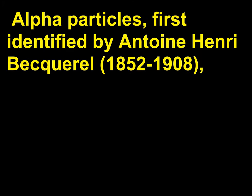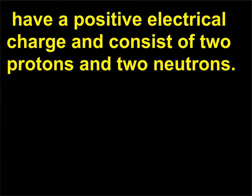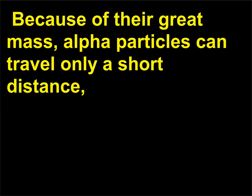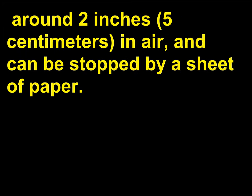Alpha particles, first identified by Antoine-Henri Becquerel (1852–1908), have a positive electrical charge and consist of two protons and two neutrons. Because of their great mass, alpha particles can travel only a short distance — around two inches (five centimeters) in air — and can be stopped by a sheet of paper.